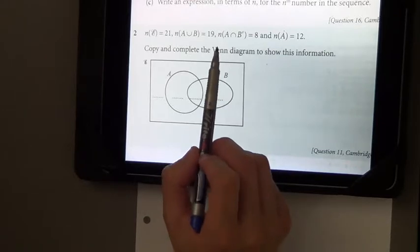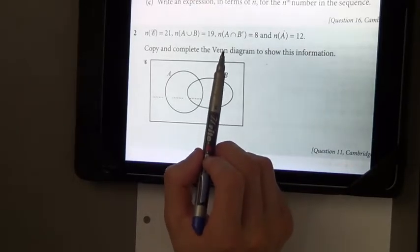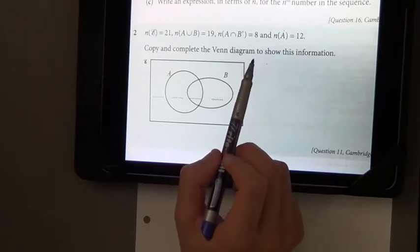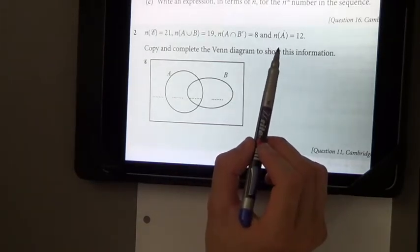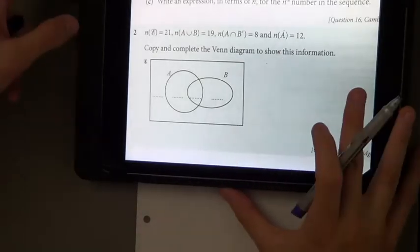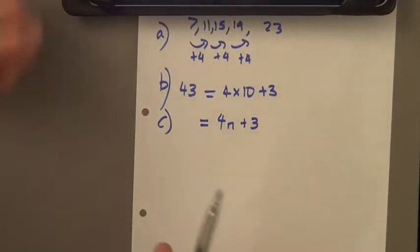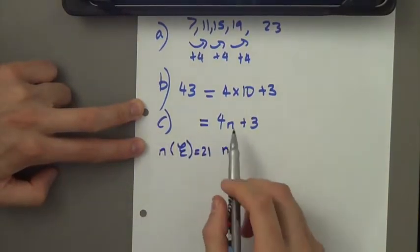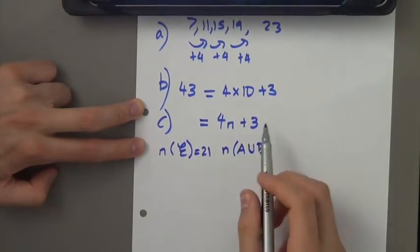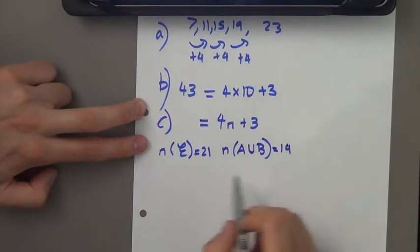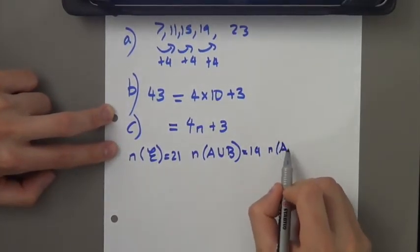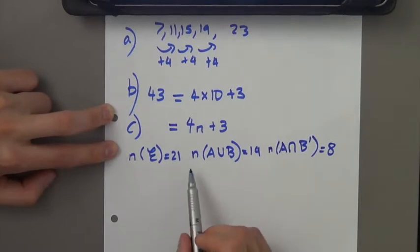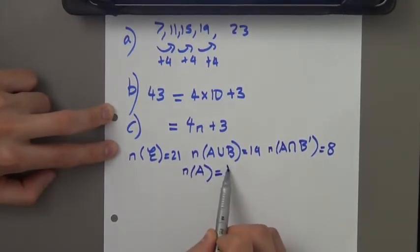The next statement says, the number of elements in A or not B, so this dash B stands for not B, has to equal 8. And then finally, the number of elements in set A has to be 12. So, let's just write that down again. So, we're saying, N, the number of elements in the universal set is 21. The number of elements in A and B is 19. And the number of elements in A or not B is 8. And finally, the number of elements in A is 12.